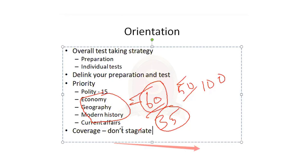Don't stagnate anywhere in your preparation. If you're reading Indian polity's fundamental rights part and taking a lot of time, read it and move to the next topic. Give at most an extra half hour on important topics, then move on. Reading easy topics will help you cover maximum ground. Cover as much as possible in all core subjects as well as current affairs. Never stagnate — don't hold on to a single topic or subject. Keep running like a marathon.